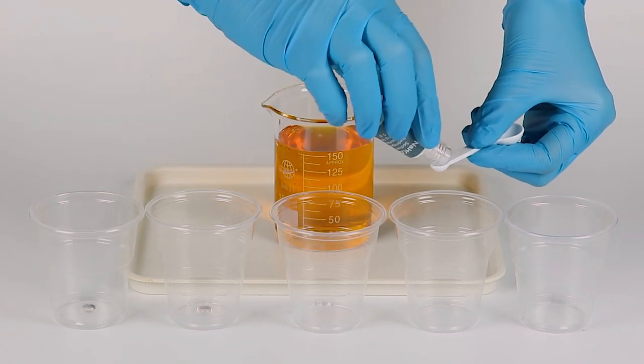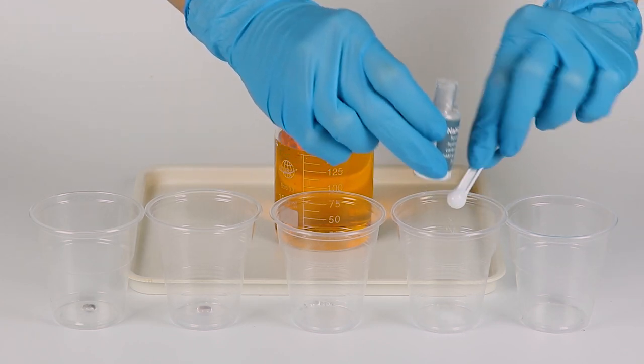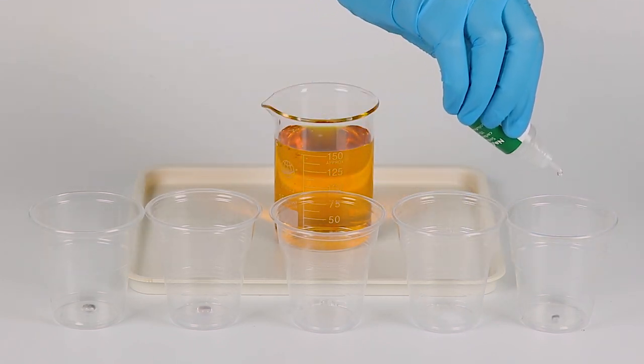Next, add one small spoon of sodium hydrogen carbonate into the fourth cup and five drops of sodium carbonate into the fifth cup.